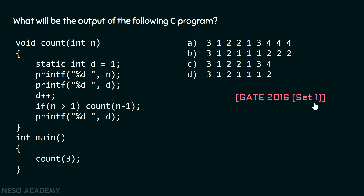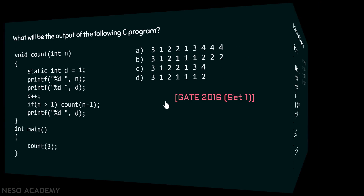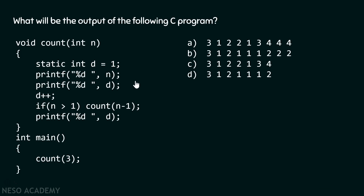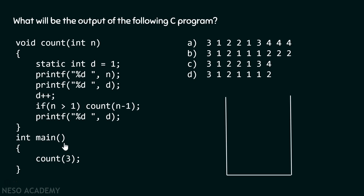It will be a great idea if you can pause the video for a while and try to answer this question on your own. I hope you are done. Let's dive into the solution. We will try to answer this question by eliminating the options. We will try to evaluate this program with the help of a stack. The execution starts from the main function, so the activation record of this function will get stored inside the stack.